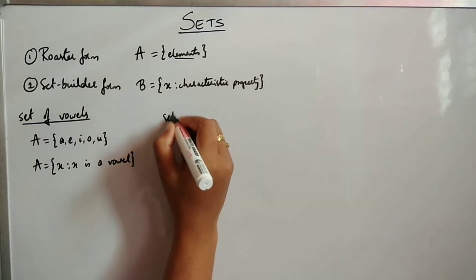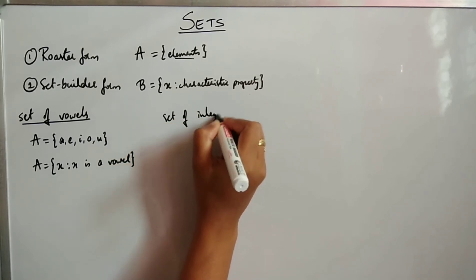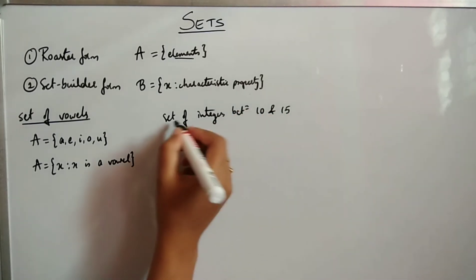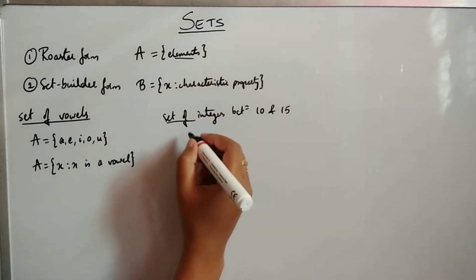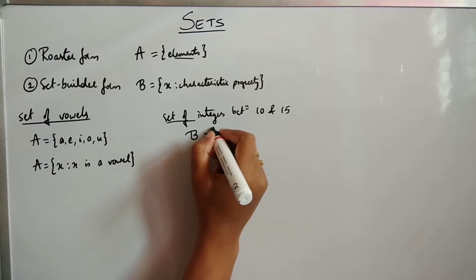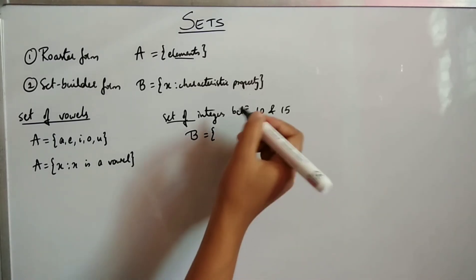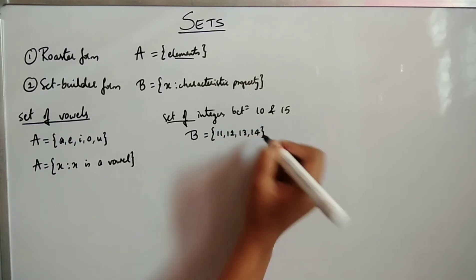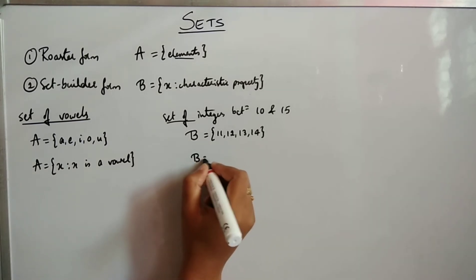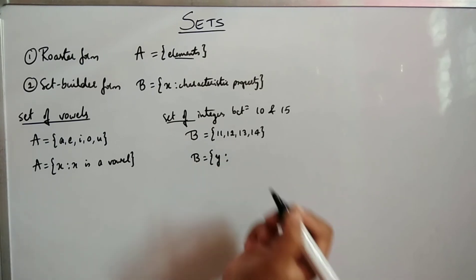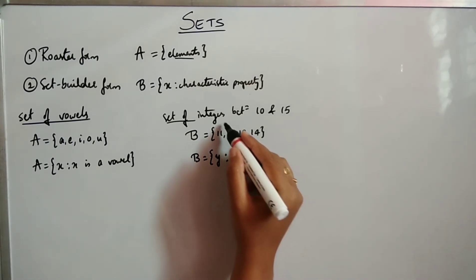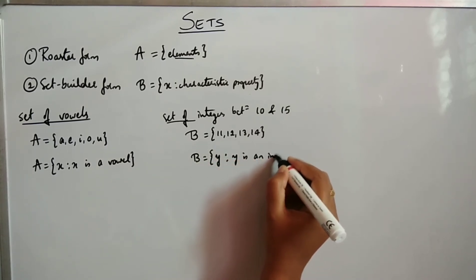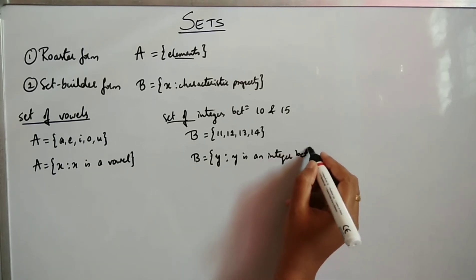Consider the set of integers between 10 and 15. In roster form we list all the elements: 11, 12, 13, 14. In set builder form we write: y : y is an integer between 10 and 15.